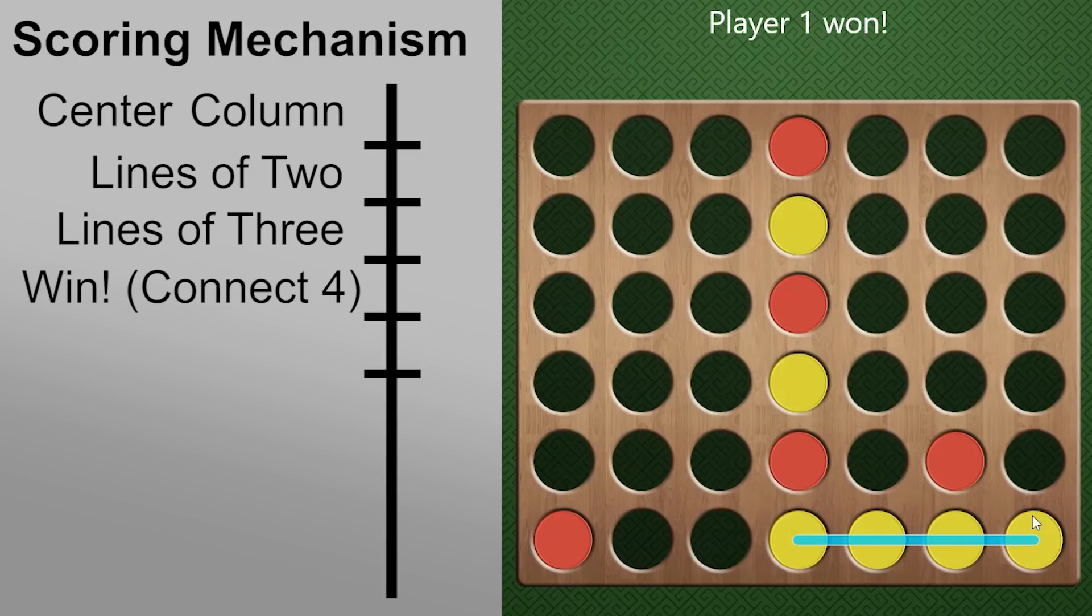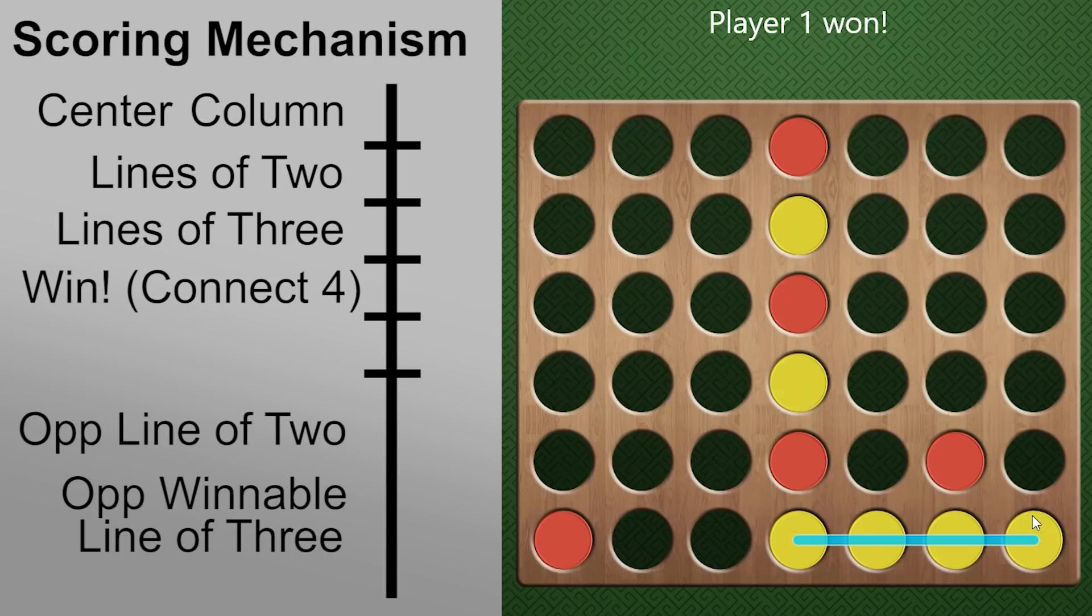Okay, cool. So from that, we already have four different factors we can base our score off of. I also want to add real quick, we can't just play offensively to win a game. So we're also going to add some defensive factors to our score. And this happens so that our AI knows to block.